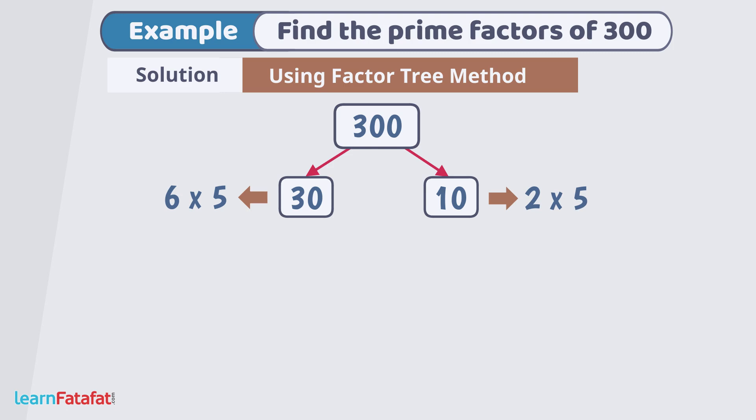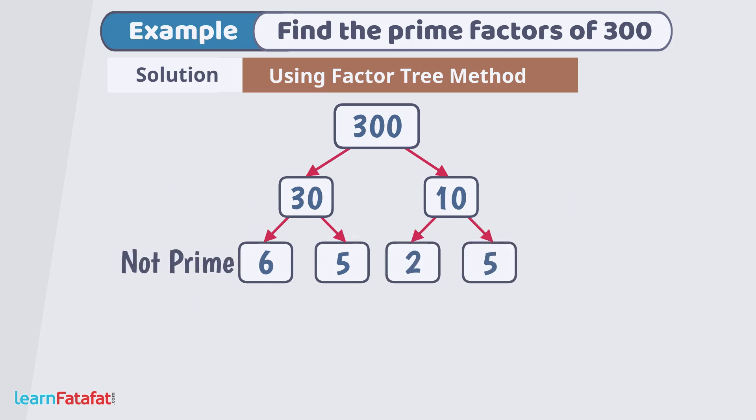So, let's extend 2 branches from 30 and write 6 and 5. Also, let's extend the branches from 10 and write 2 and 5. 6 is not prime. So, let's make 2 more branches from 6 that is 2 and 3.